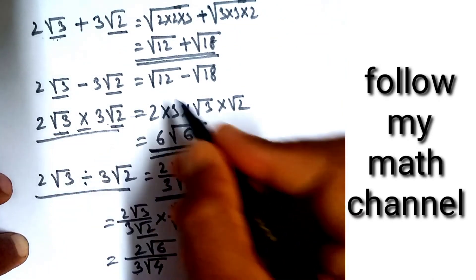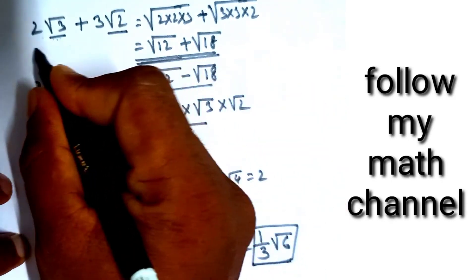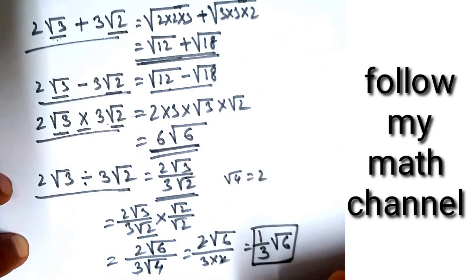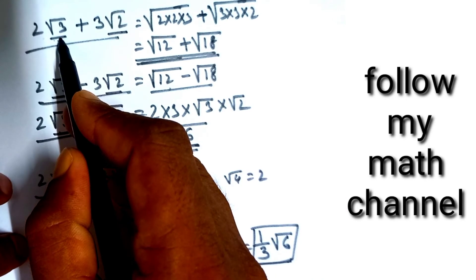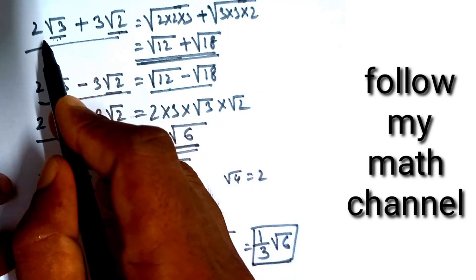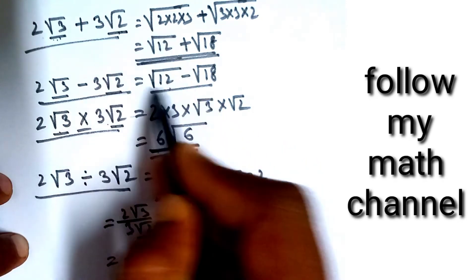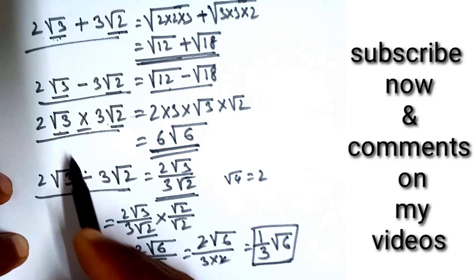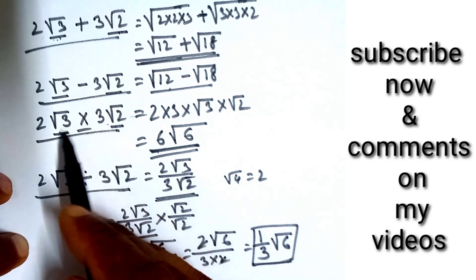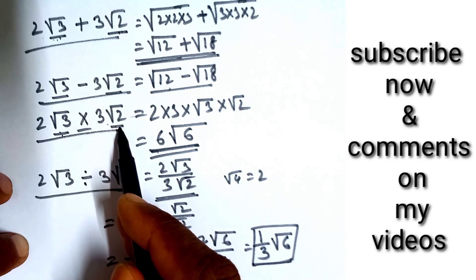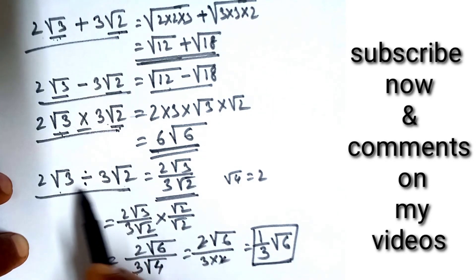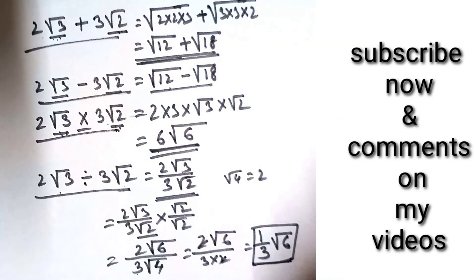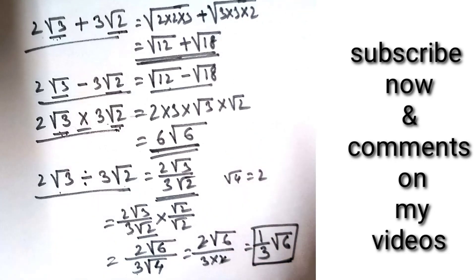So this is the value. If there is no same term, you cannot plus or minus between them. But in multiplication and division, same term or not, you can multiply and you can divide between them. So thank you for watching the video. Next time we can discuss more — please subscribe.